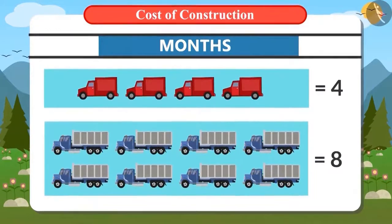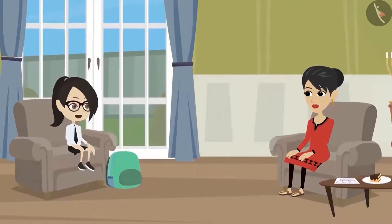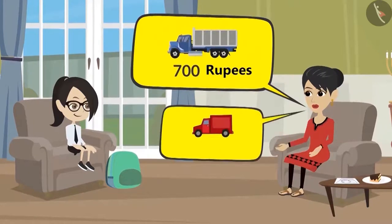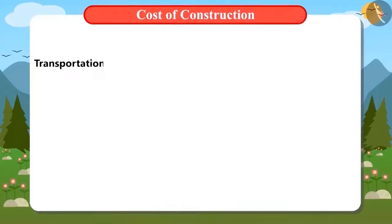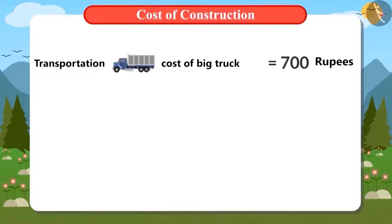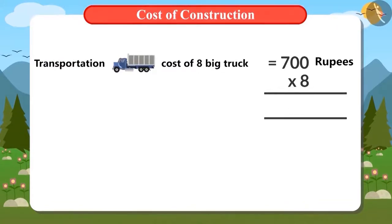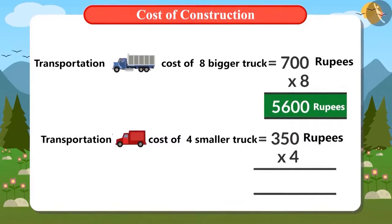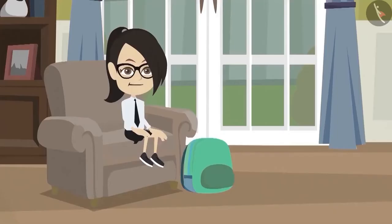Now let's calculate the cost of transportation. It costs 700 rupees for a big truck and 350 rupees for a small truck. For 8 big trucks: 700 × 8 = 5,600 rupees. For 4 small trucks: 350 × 4 = 1,400 rupees. So the total transportation cost is 5,600 + 1,400 = 7,000 rupees.